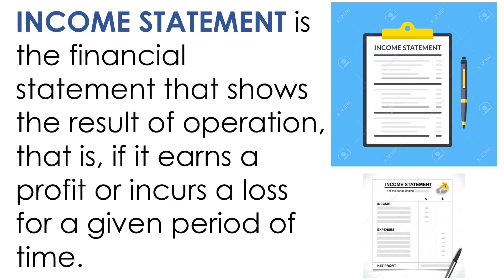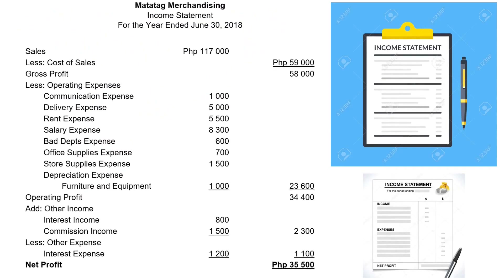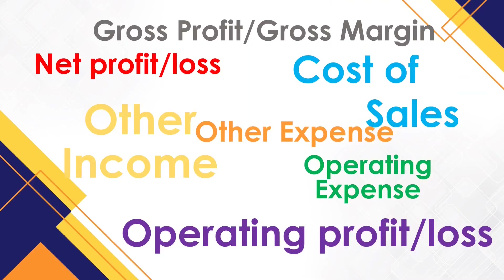One way to determine profit or loss is the use of an income statement. It is a financial statement that shows the result of operation — that is, if it earns a profit or incurs a loss for a given period of time. Generally, a firm prepares a financial statement on a monthly basis. For tax purposes, it is prepared quarterly or annually. Here is a sample income statement of a trading firm. These are the terminologies you need to know in order to fully understand the income statement.